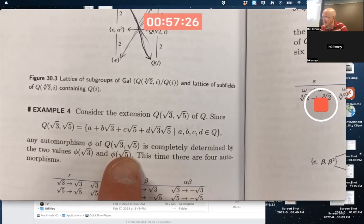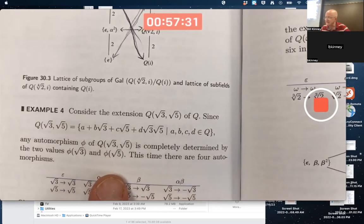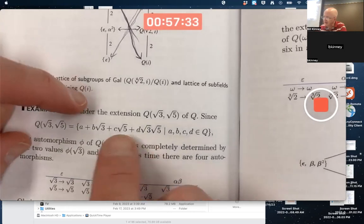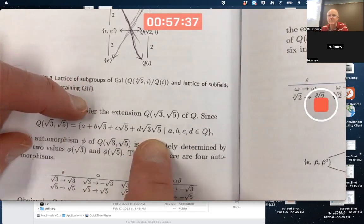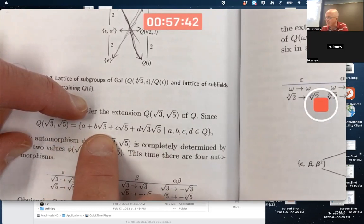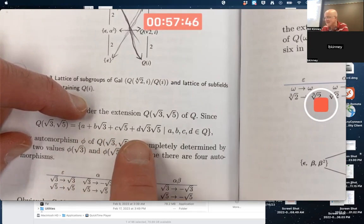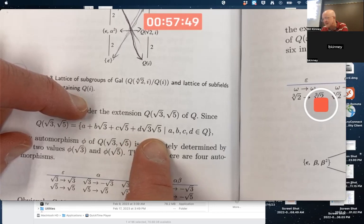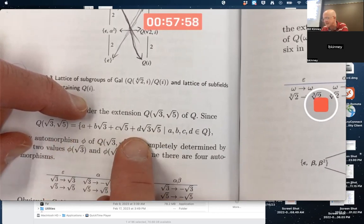Any automorphisms of this are completely determined by that. That's because of two things. Again, if you apply phi to an expression like this, being doubly operation-preserving, you'll be able to say it's phi of a plus phi of b times phi of root 3 plus phi of c times phi of root 5 plus phi of d times phi of 3 times phi of root 5. And based on the fact that it's got a fixed field, phi of a has to be a, phi of b has to be b, phi of c has to be c, phi of d has to be d.